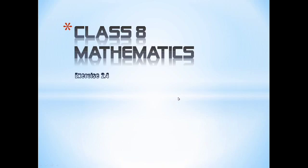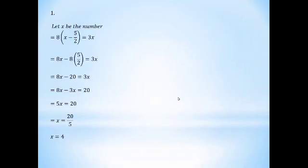Exercise 2.4. The textbook question is: the number is 5 by 2, and the result is 18 and multiply.